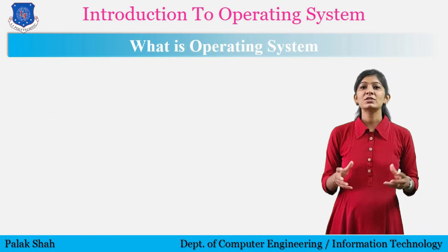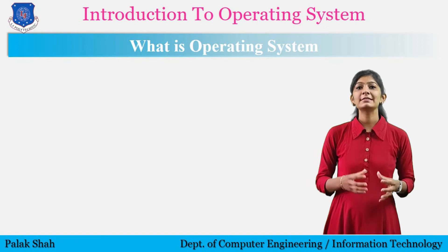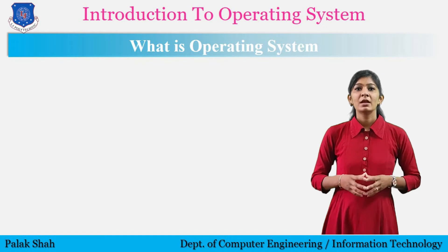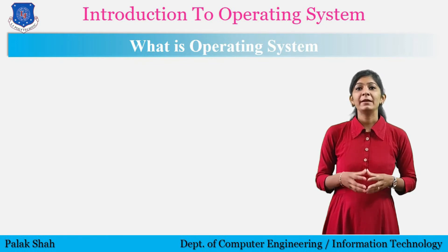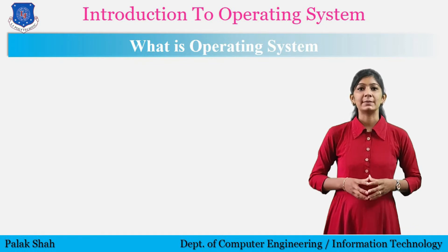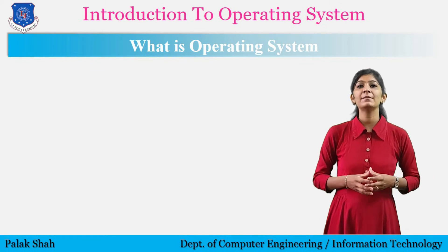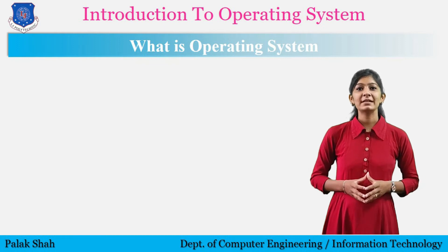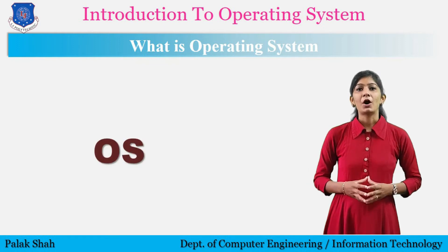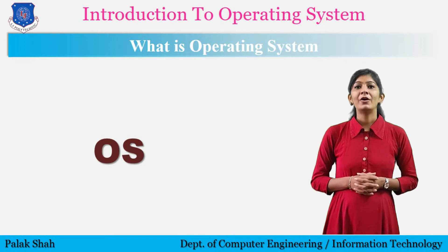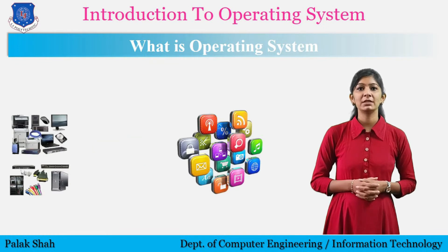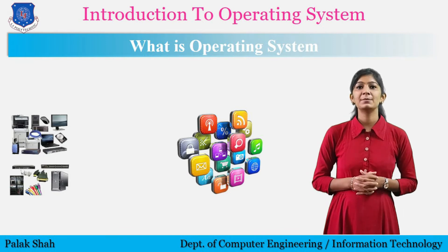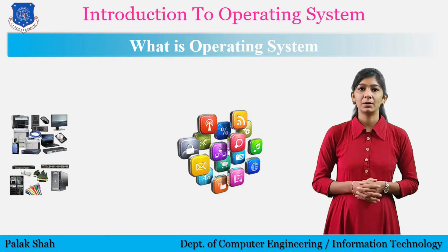Now we will learn what is an operating system. Operating systems were first developed in the late 1950s to manage tape storage. The General Motors Research Lab implemented the first operating system in the early 1950s for their IBM 701. In the mid-1960s, operating systems started to use disks. An operating system is a program or application software which provides the interface between the computer hardware and other software. An operating system is the program designed to run programs on the computer.